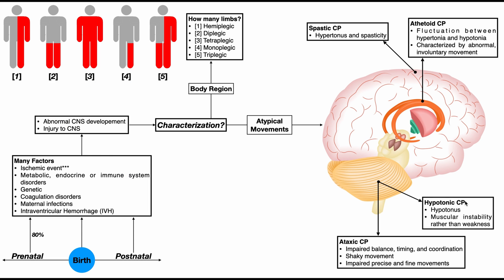Finally, we have hypotonic CP, the rarest of all four types. This produces hypotonus, which manifests as muscular instability rather than weakness — it's not that the muscles are weak, but that there's a control issue; they're not able to activate appropriately and so appear hypotonic. This is also thought to be caused by damage to the cerebellum, but it presents very differently than ataxic CP.